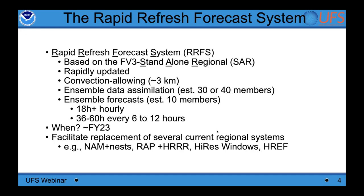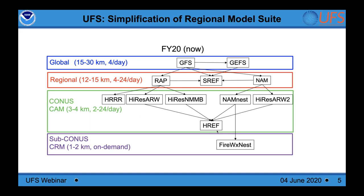The Rapid Refresh Forecast System is based on the standalone regional FV3 system, intended to be rapidly updating and convection-allowing at 3 km, likely leveraging ensemble data assimilation on the order of 40 members, producing both deterministic and ensemble forecasts. Nominal time horizons are at least 18 hours and further toward 60 hours every 6 to 12 hours. The goal is to replace several existing operational model systems, including the NAM, RAP, HRRR, NAM nests, and HREF.